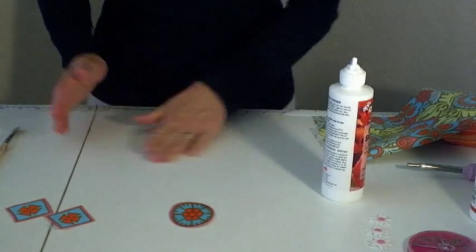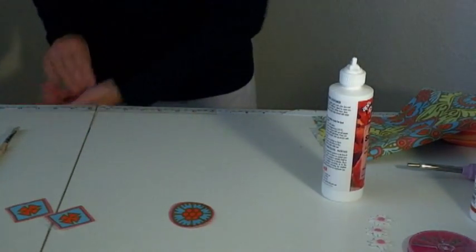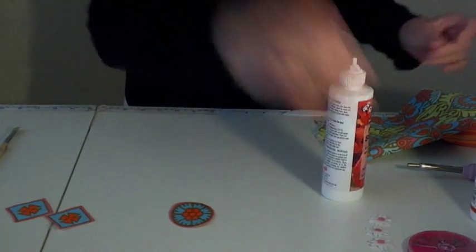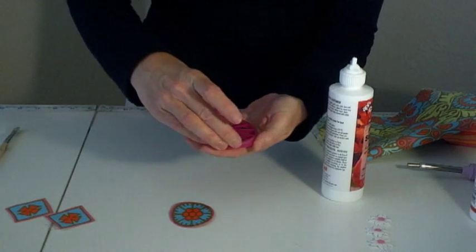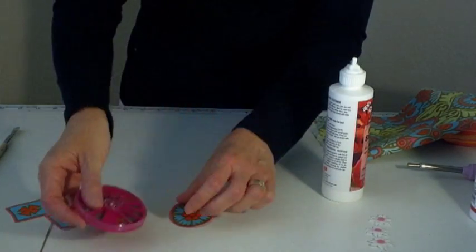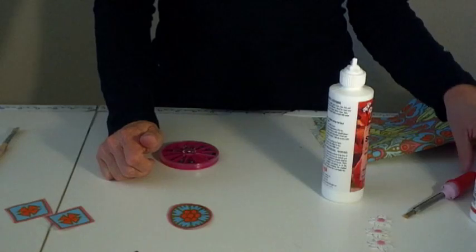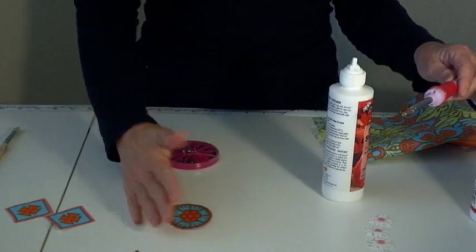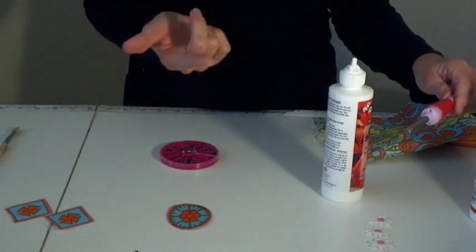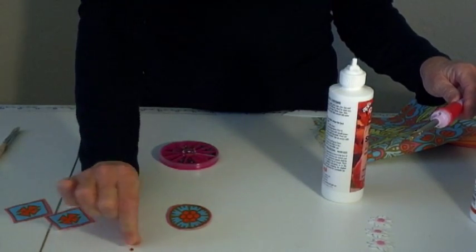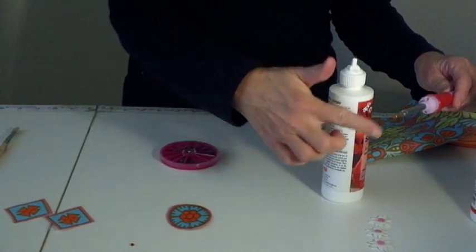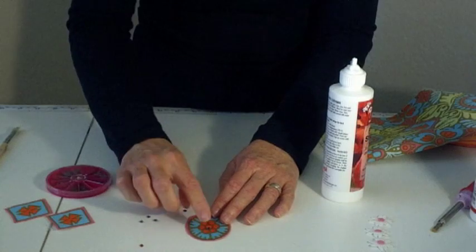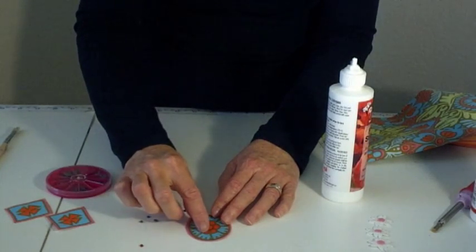So once you've trimmed that all the way around, the next step that we're going to do is to embellish it. I like to use these, they're actually pre-glued crystals. Today I'm going to use this tool to attach the crystals to my piece. And you can also use craft glue and these are pre-glued crystals. So this is just like an iron basically and it just heats it on there.